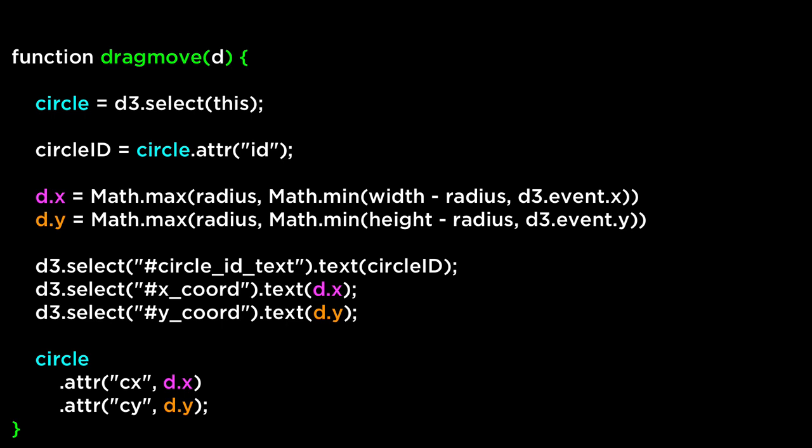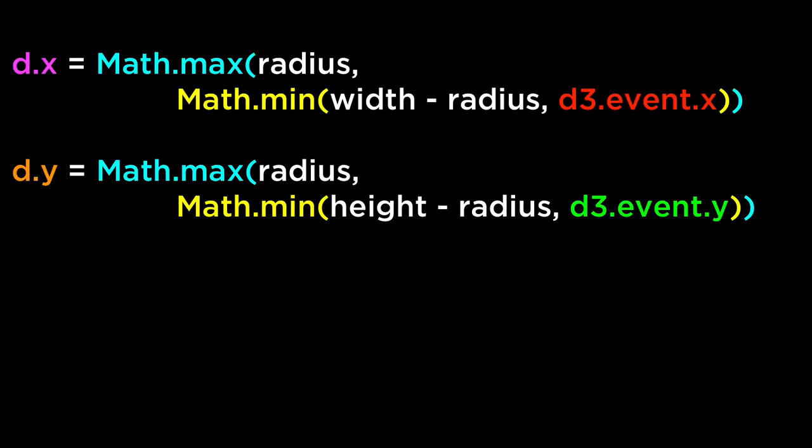Because the drag move function is called every time the mouse moves as little as one pixel, the circle CX and CY attributes will be updated fast enough that it will look like it is moving fluidly. Let's talk about the math. For the x coordinate, the CX of the circle can only go from 25 to the width of the SVG viewport minus 25. Even if D3.event.x is bigger than width minus 25, the Math.min formula will keep the CX stuck at the width minus 25 value. For the y coordinate, the CY can only go from 25 to the height of the SVG viewport minus 25. The Math.min formula ensures that regardless of where you drag the cursor, the circles will stay inside the bounding box.